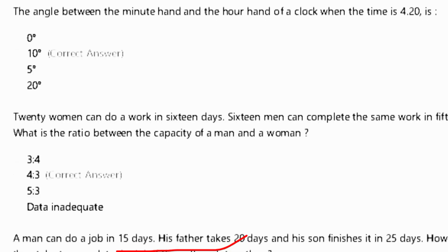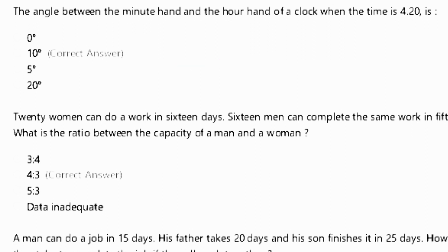Next, number 22: a man can do a work in sixteen days, and sixteen men can complete the same work in fifteen days. What is the ratio between the capacity of a man and a woman?